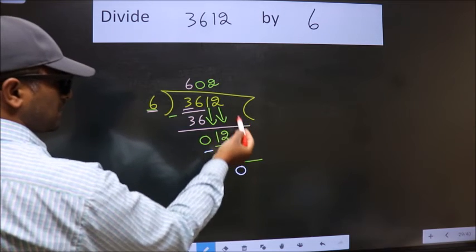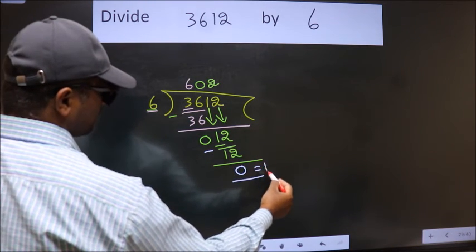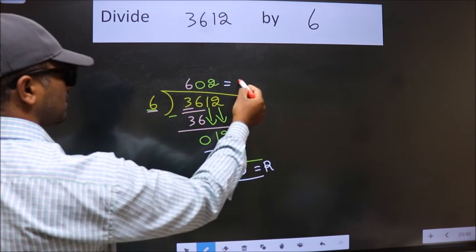No more numbers to bring down. So we stop here. This is our remainder. This is our quotient.